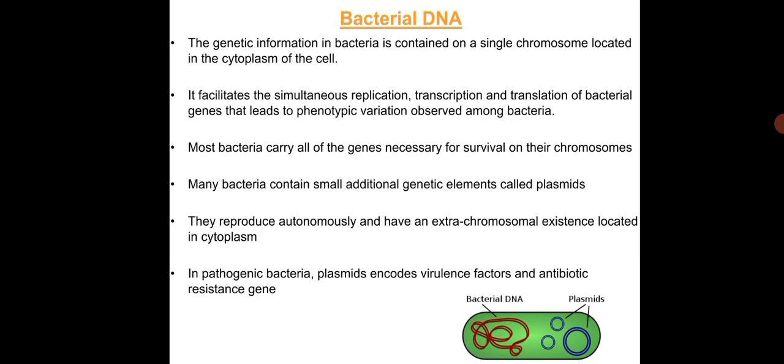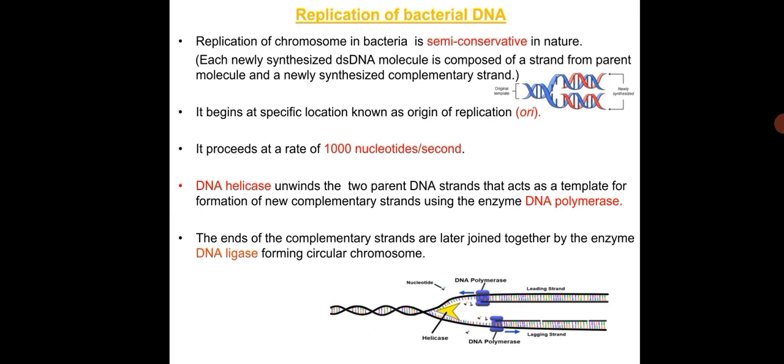Small additional genetic elements called plasmids can reproduce autonomously and have an extra-chromosomal existence in the cytoplasm of the cell. In pathogenic bacteria, plasmids encode for virulence factors and antibiotic resistance genes.